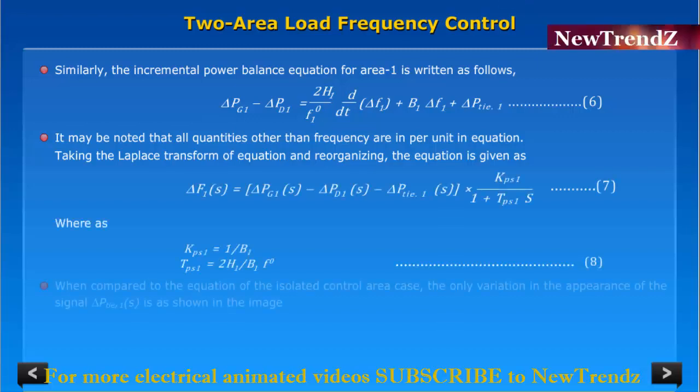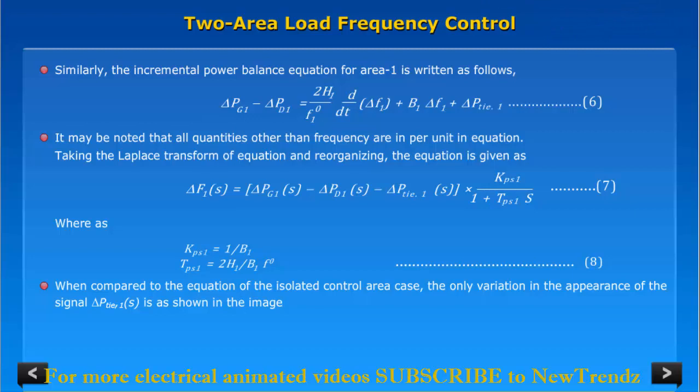When compared to the equation of the isolated control area case, the only variation in the appearance of the signal ΔPtie,1(s) is as shown in the image. Taking the Laplace transform of equation 3...